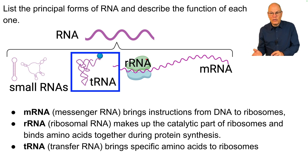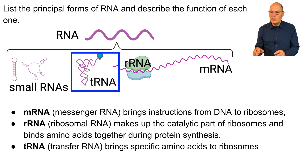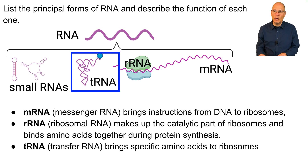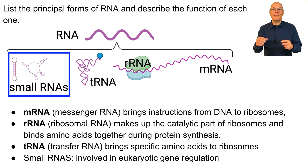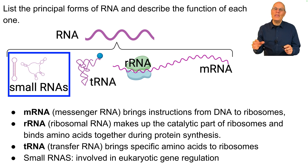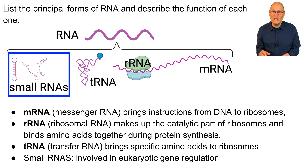tRNAs, or transfer RNAs, bring specific amino acids to the ribosomes for protein synthesis. Small RNAs are a large group of RNAs of different shapes and sizes, and they're involved in eukaryotic gene regulation.